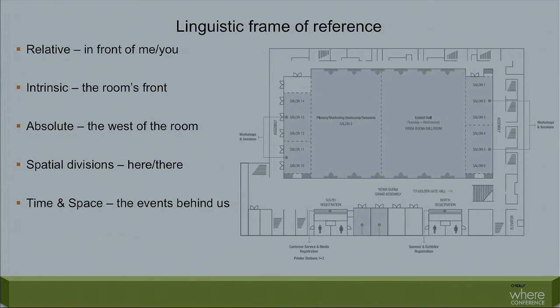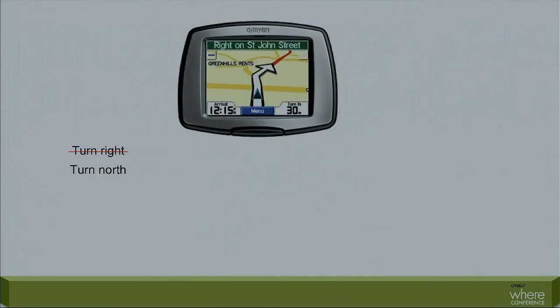I'm going to speak about my passion for language and what drew me to this point. We have these things called linguistic frames of reference. Relative to me, in front of me is this way. Intrinsic would be the room's front — maybe because this is where the stage is. Absolute: I'm in the west of the room. We also have other divisions, like the difference between here and there, and time and space — the events behind us, the events in front of us. These pattern differently in every single one of the world's 7,000 languages. You can imagine this is important for something like a GPS in a car — if it was telling you to turn right, you can't say that in a lot of languages which only have absolute reference. You'd have to say turn north, for example.